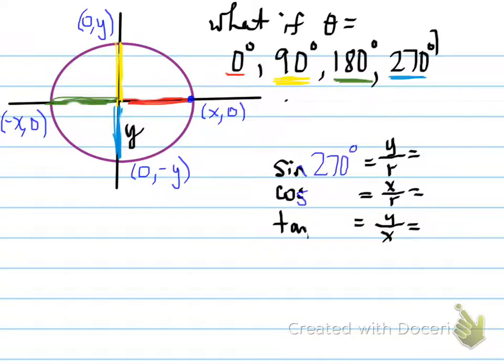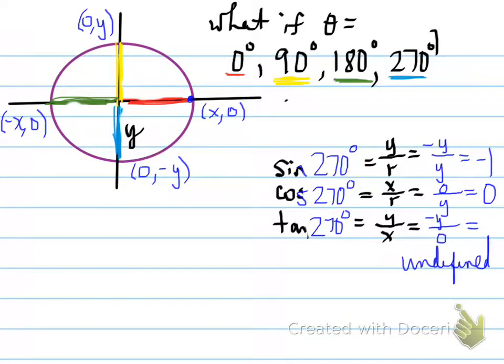So, sine of 270 is equal to y over r, which is equal to negative y over y, which is equal to negative 1. Cosine of 270 is equal to x over r, x is 0, r is y, 0 over y is just 0. Finally, tangent of 270 is equal to y over x. y is negative y, x is 0, so therefore we have it undefined at tan of 270.